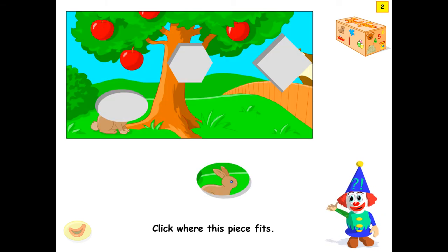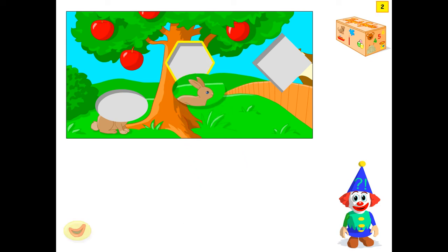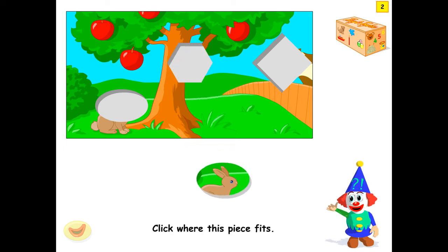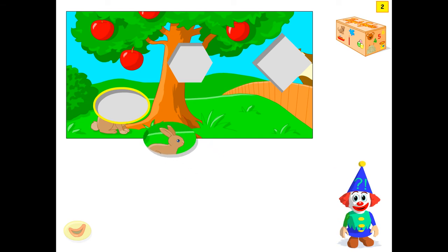Click where this piece is. Again, where this piece is? If you click wrong, then it will say 'no, it doesn't fit there, have another go.' Another go, yes. Now we will complete the picture, yes.